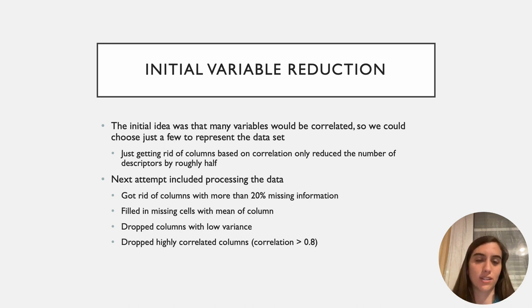So, our next attempt included processing the data. That meant getting rid of columns that had more than 20% of their information missing, and then from there, filling in the remaining missing cells with the mean of the column they were in, and then dropping columns that had low variance. And finally, doing what we did in the first step and dropping highly correlated columns, which for us was a correlation above 0.8. And then after doing all of this, we kept track of which variables made it into the final dataset, went back to our original dataset, and used only those variables.